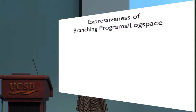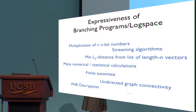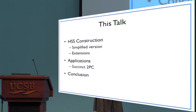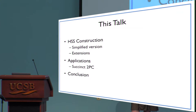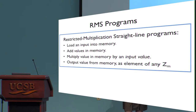Branching programs are actually a pretty rich class of computations. If somebody tomorrow made it illegal to do any computation beyond this, I would still be pretty happy — things like approximations, and essentially all cryptographic primitives have some sort of instantiation within this class. For the construction, instead of going directly with branching programs, it will be convenient to work with the class of programs known as restricted multiplication straight-line programs, or RMS.